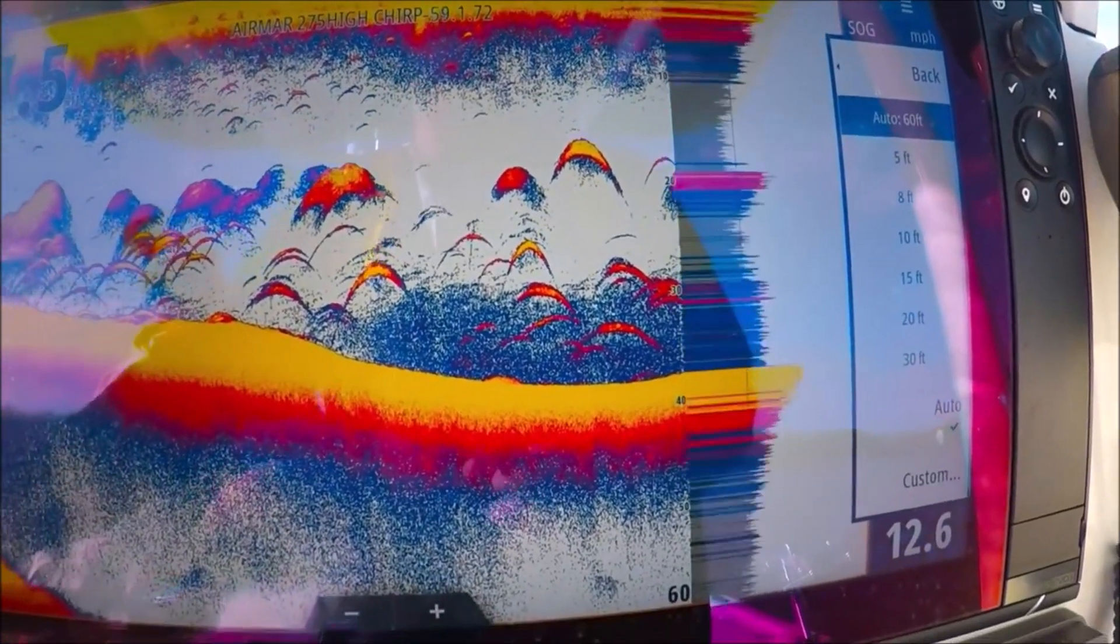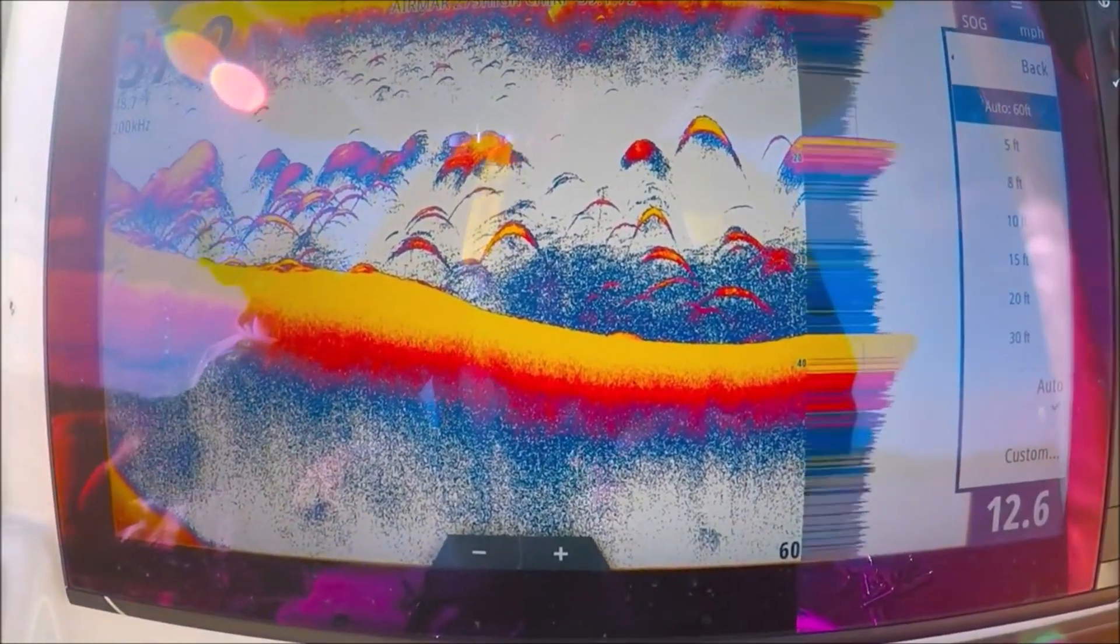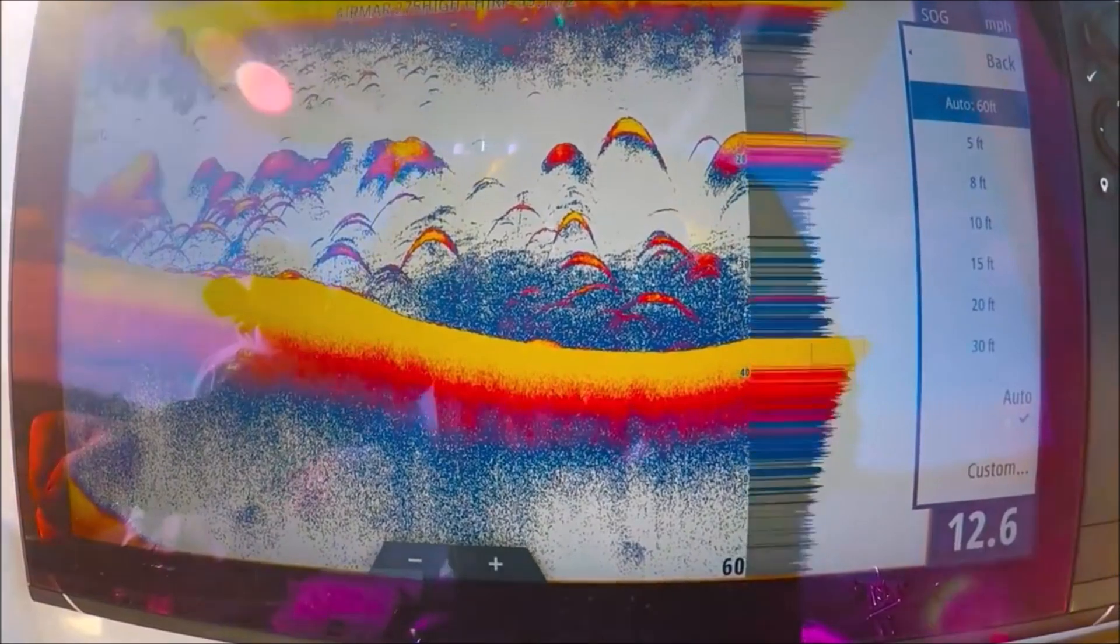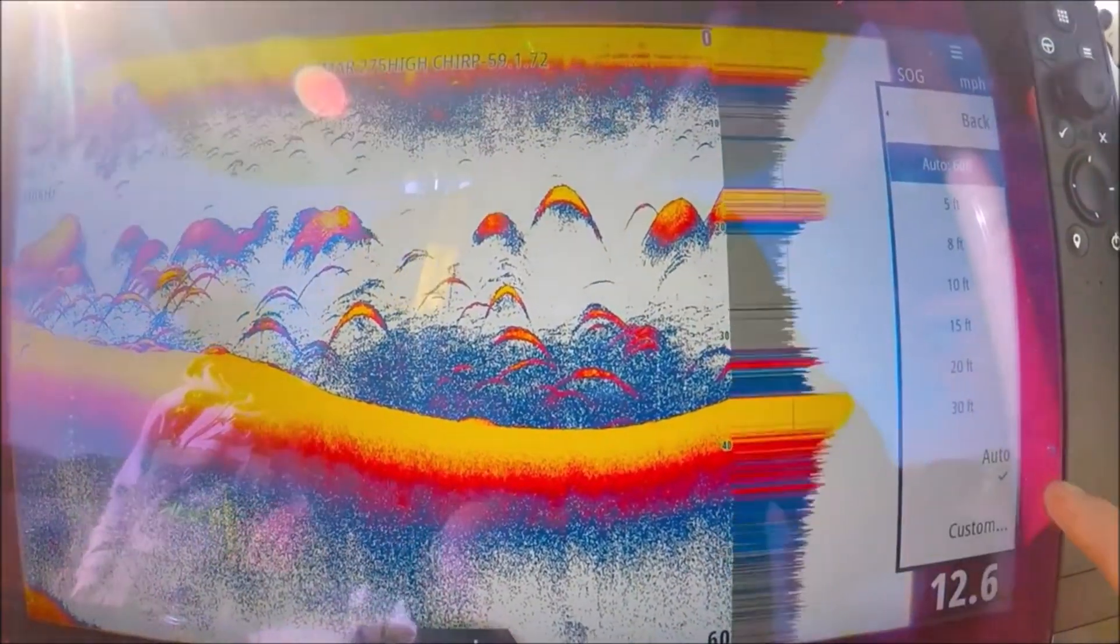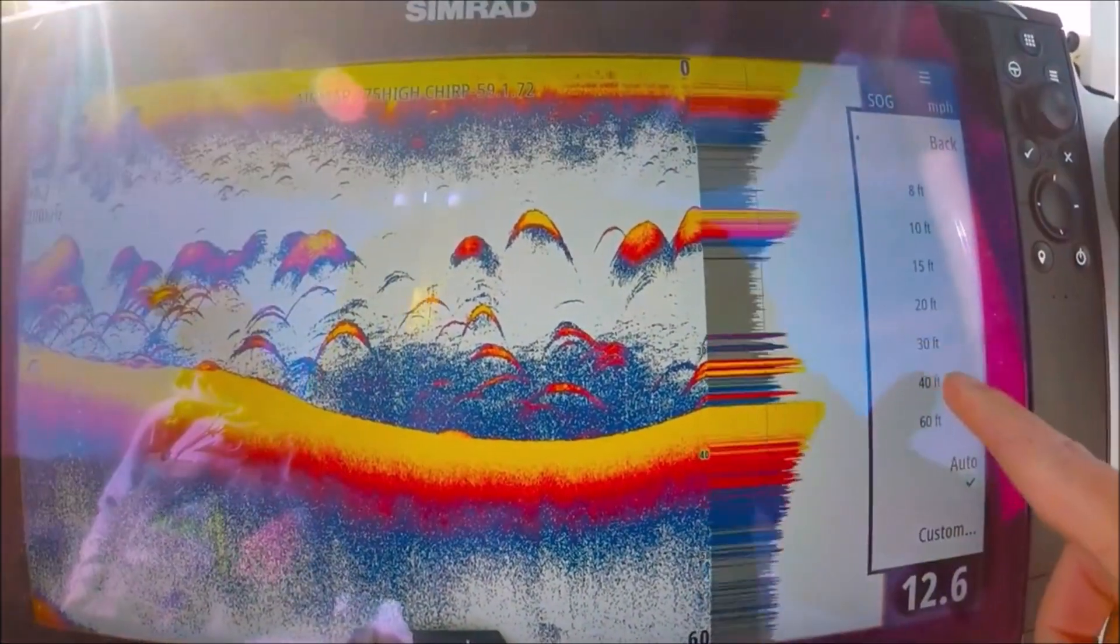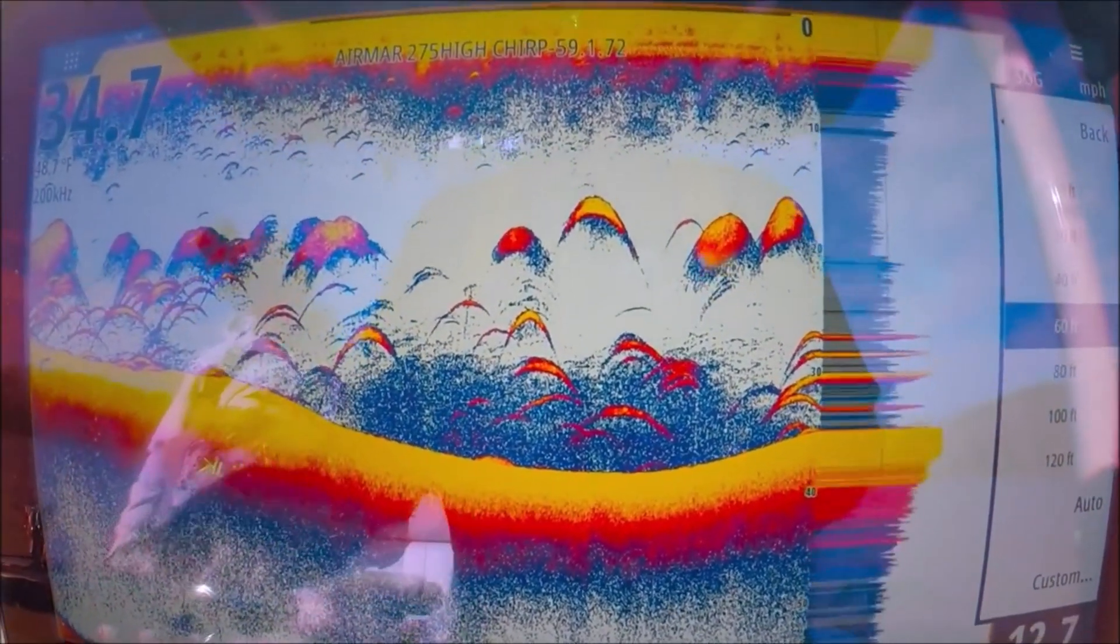If you're fishing in say 37 feet of water like we are right now and you're staying in 37 feet all day long, set it to a manual range, for instance 40 feet. Looks good, but we're not using all the screen, so we can go to a custom here. Let's hit custom.